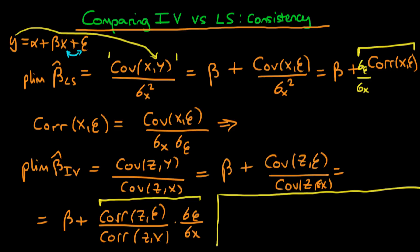Well all we have to do then is we just have to say when is this term here smaller than this term here. And if we do that because in both of these expressions we've got this sigma epsilon divided by sigma x.